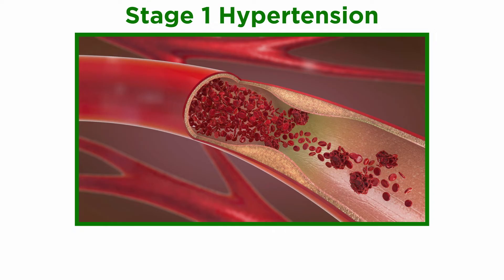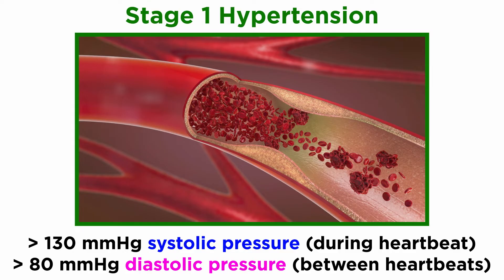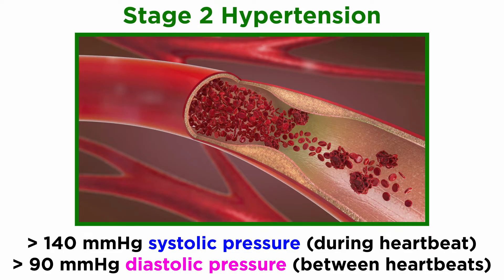Generally, stage 1 hypertension can be defined by blood pressure higher than 130 mmHg systolic or 80 mmHg diastolic pressure, those referring to the pressure in the arteries during a heartbeat and in between heartbeats, respectively. Stage 2 hypertension is defined by blood pressure above 140 mmHg systolic and 90 mmHg diastolic.